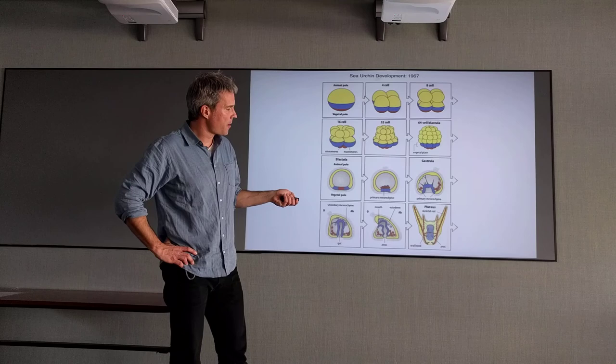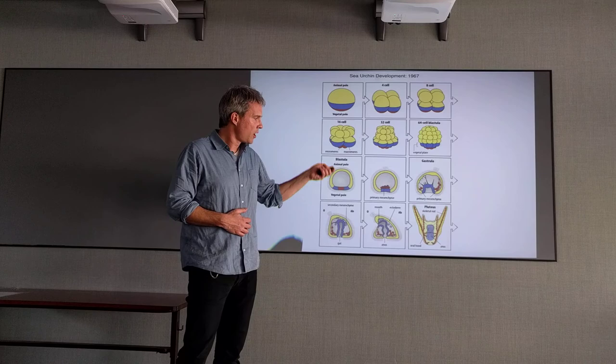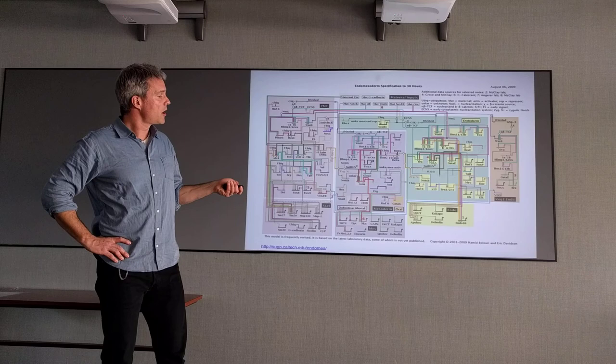So you have a lineage, you have a geometrical arrangement, you have an explanation of which tissues signal to which and where these determinants end up. It's a pretty good description, maybe not an explanation, of sea urchin development. Of course, the way we describe sea urchin development today is like this. This is the result of 30 years of postdoctoral slavery in a basement of Caltech in the lab with Eric Davidson.